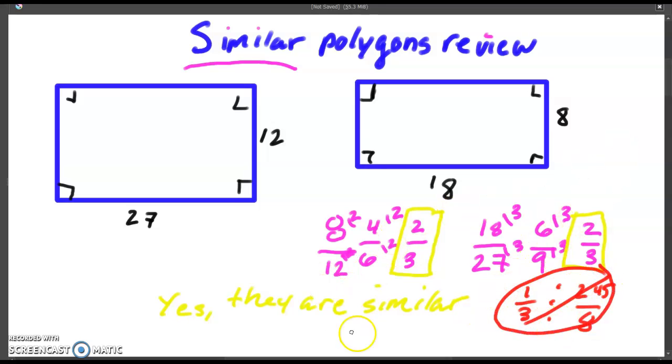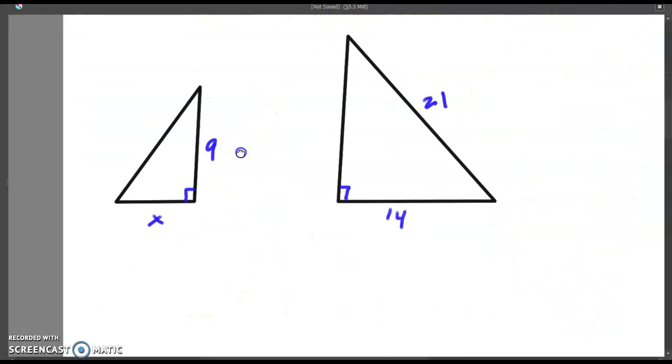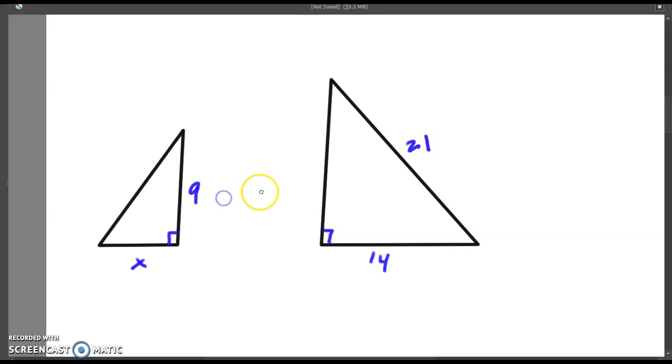Let's move on to the other things that we can do with similar polygons. The other thing that you're going to be asked to do with similar polygons is find a missing value, like this. Now, this is only if they say these are similar. If it does not tell you that these are similar, you can't do anything with it.